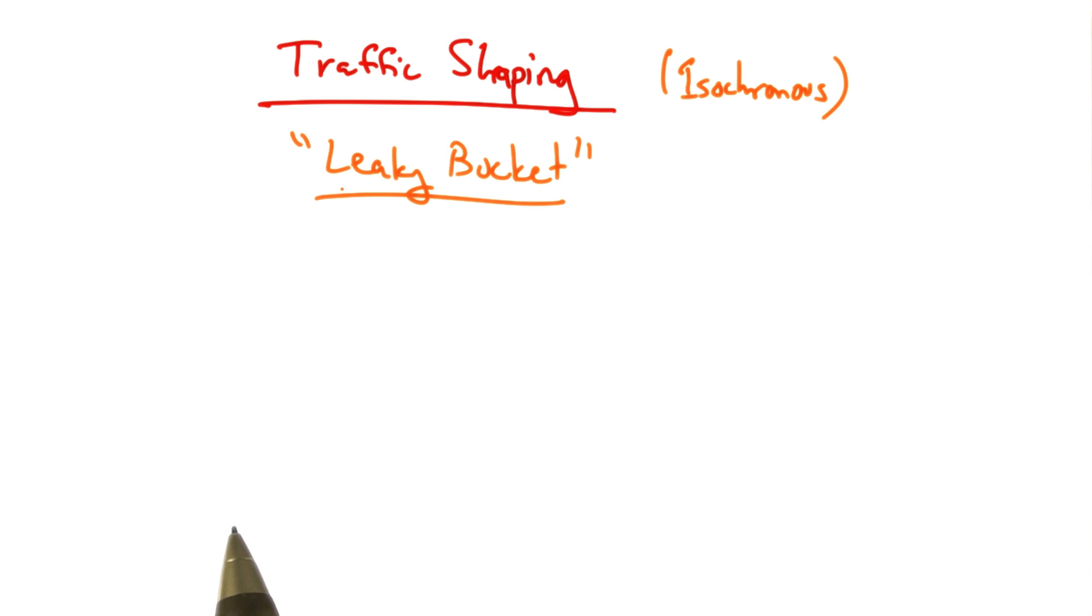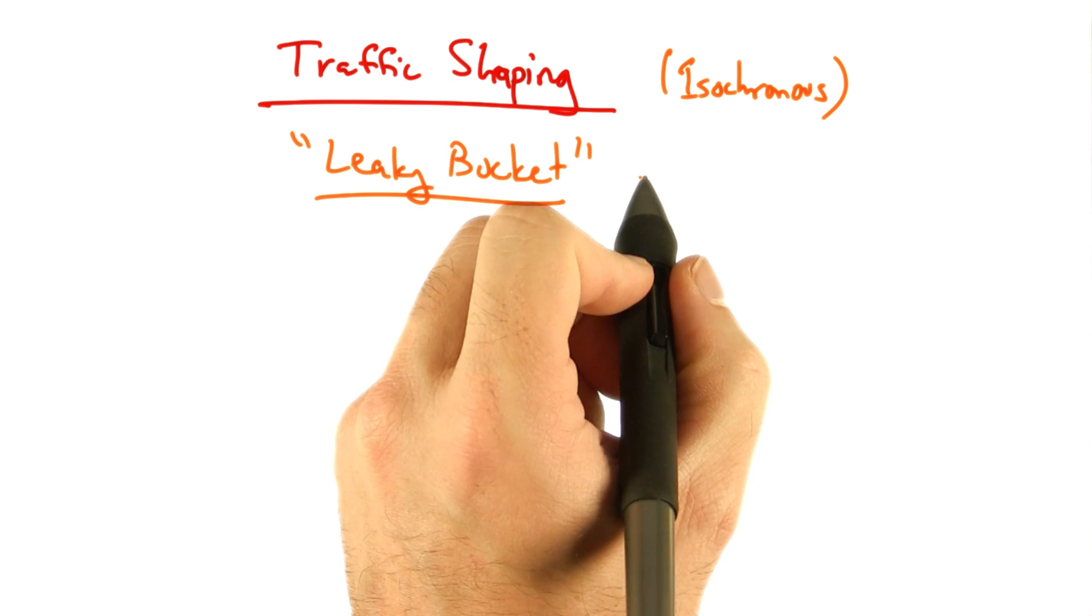One way of shaping traffic is with what's called a leaky bucket traffic shaper, where each flow has its own bucket.